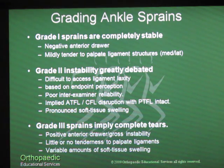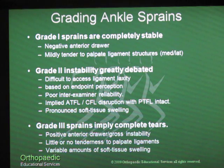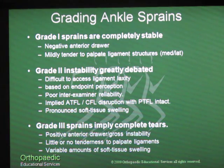How do you grade an ankle sprain? A grade three sprain is the easiest to identify because patients have gross instability, usually a significant amount of swelling, and really no pain because they've disrupted all of the nerve fibers in the ligamentous tissue. A grade one sprain typically causes some pain and tenderness, usually not a lot of swelling and not significant laxity. Grade two sprains are the most difficult to assess and require a high level of experience. These patients typically have injury to the anterior talofibular and calcaneofibular ligament structures.